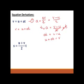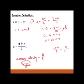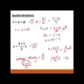The second equation comes from the fact that displacement equals average velocity times time. Average velocity is (u + v) / 2. So (u + v) / 2 = s / t. Multiplying both sides by t gives s = (u + v) / 2 × t. That is our second equation derived.